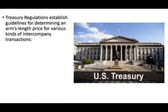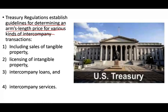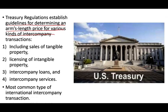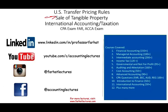The Treasury Department's regulations establish guidelines for determining arm's length prices for various kinds of intercompany transactions, including sales of tangible property, licenses of intangible property, intercompany loans, and intercompany services. The most common type of international transaction is the sale of tangible property, though intangibles are playing an increasingly larger role. In the next session, we will look at the sale of tangible property and the specific rules that govern it.